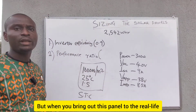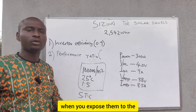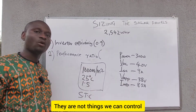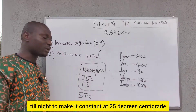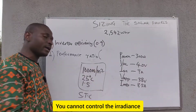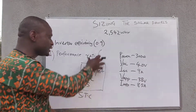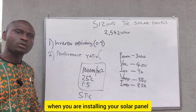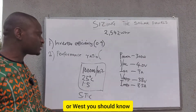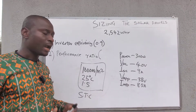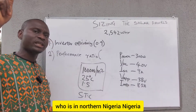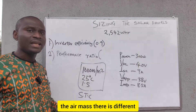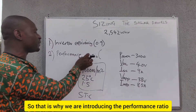But when you bring the panel out to real-world conditions, these parameters are no longer constant — they are things we cannot control. You cannot keep the temperature constant at 25 degrees Celsius from morning to night, and you cannot keep the irradiance constant at 1,000 watts per square meter. These are parameters only controlled by nature. So whether you are installing in southern Nigeria or northern Nigeria, the temperature, irradiance, air mass, and weather conditions will all differ.